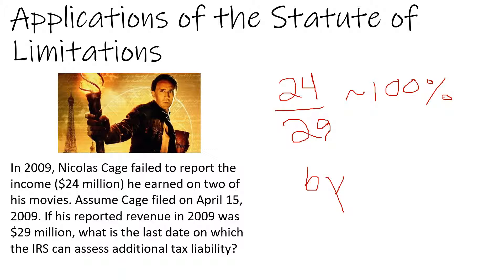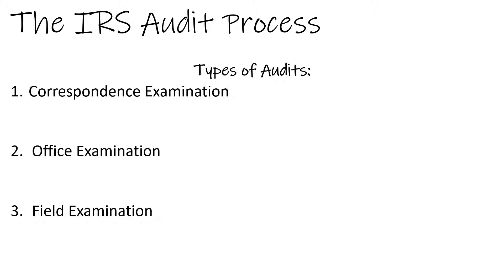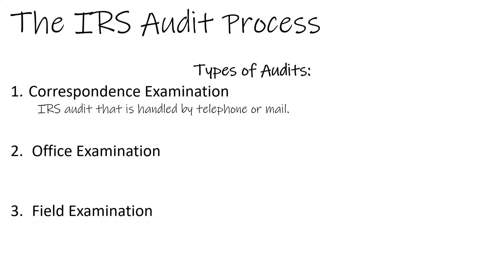They can come after him at any time if they determine that the transaction was actually an attempt at fraud. Once the IRS detects irregular activity, it typically engages in an audit. There are three types of IRS audits. The first is a correspondence examination — an IRS audit that is handled entirely by telephone or mail. The IRS will not come to your place of work and you will not be required to go to the IRS.